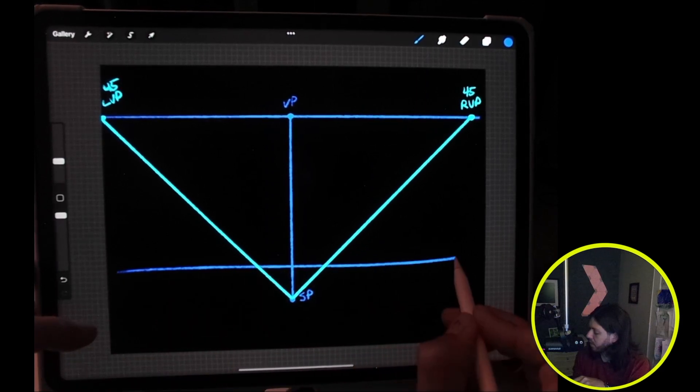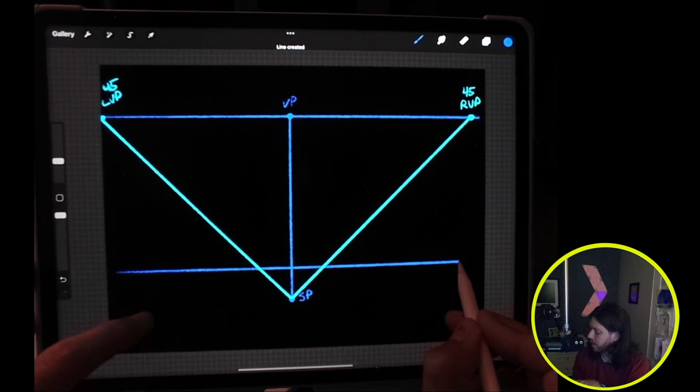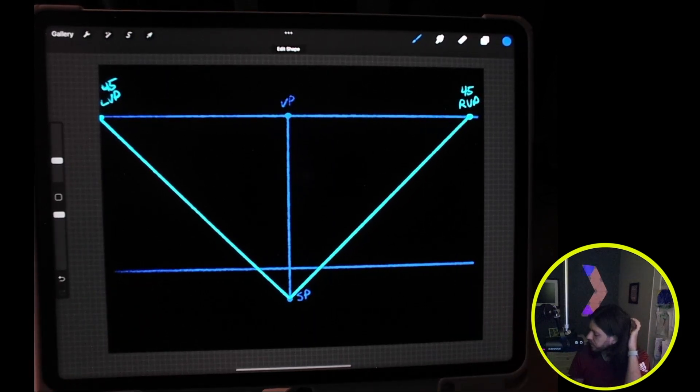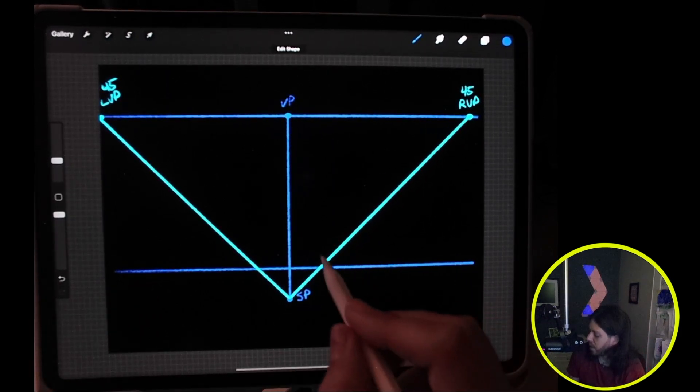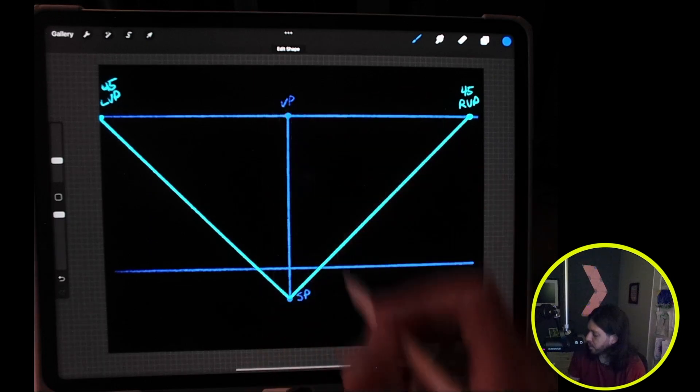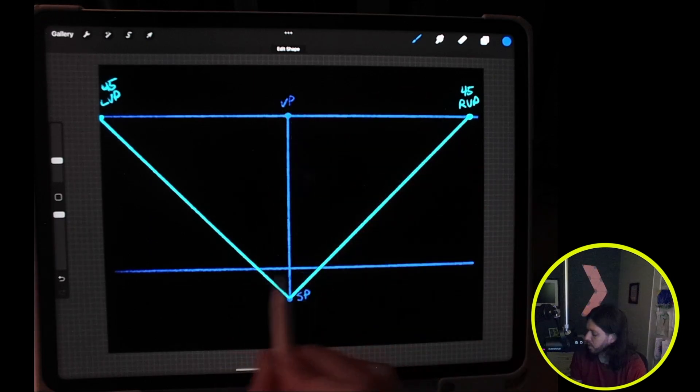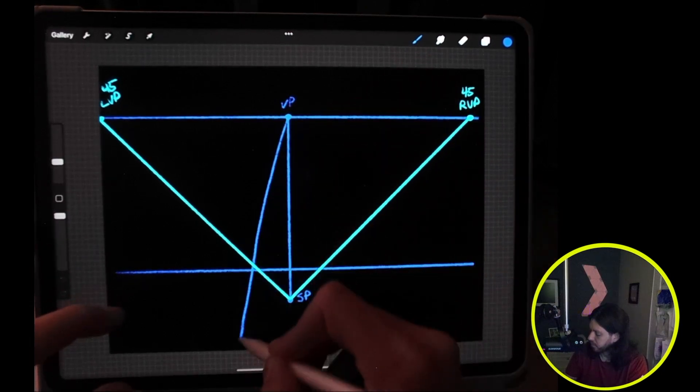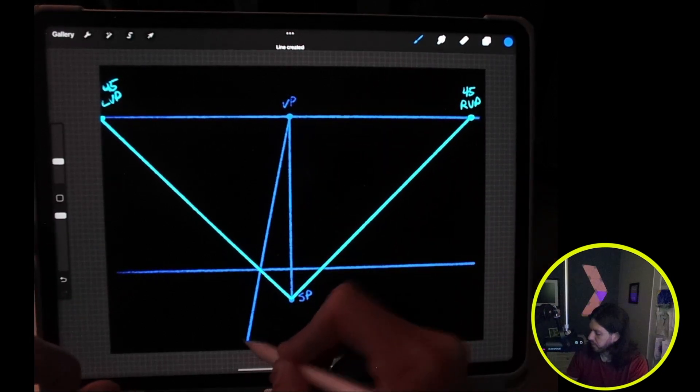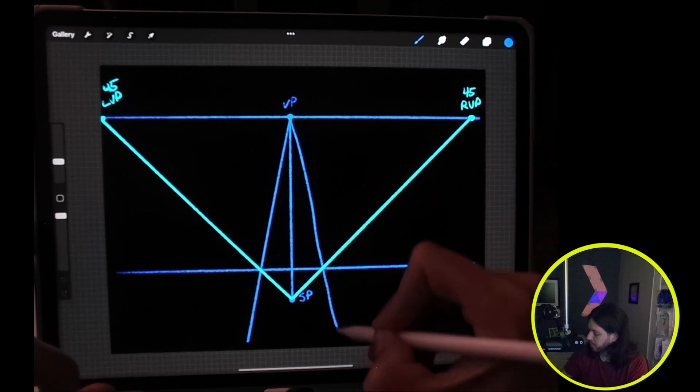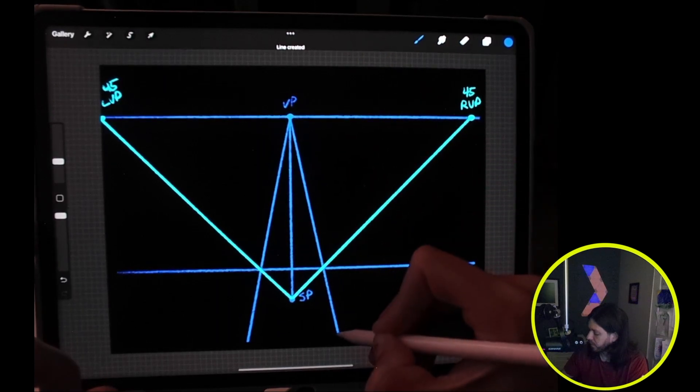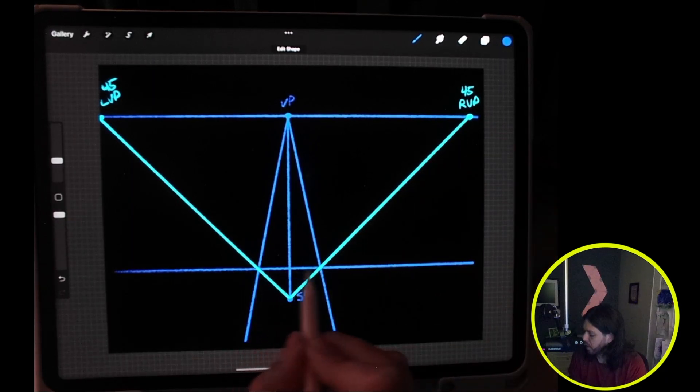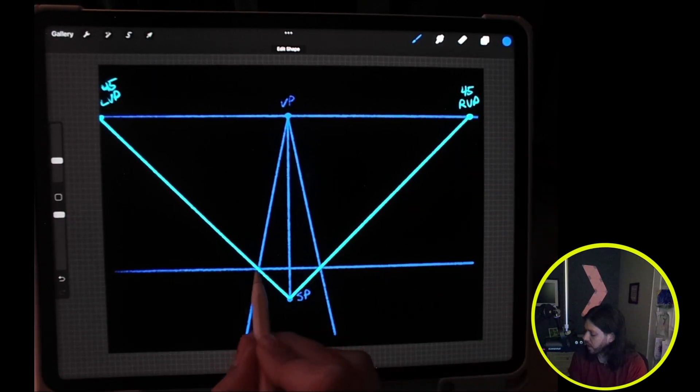So roughly there, can be any size. I'll snap and hold here, and then I will draw a couple vanishing points to each of these corners of the square. Since we've done the 45-degree angle, these are going to be equal in size.